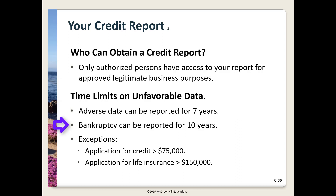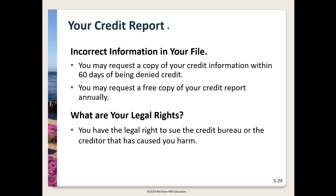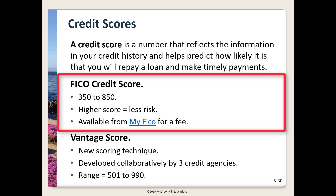Only authorized persons for approved legitimate business purposes can access your credit report. It can also be supplied in response to a court order, or you can request a copy yourself. Unfavorable information can only be reported for seven years, but bankruptcy remains on your credit report for 10 years. These time limits can be waived if you're applying for credit above $75,000 or life insurance in excess of $150,000. If you're denied credit, you can request a free copy of your credit report within 60 days of the denial. We're all allowed one free copy each year. If data in your credit report is incorrect, you can sue the credit bureau or the creditor who caused the harm.